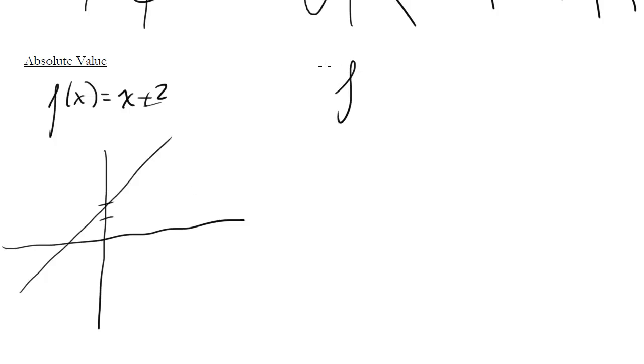What would then, what would this look like? f of x equals absolute value of x plus 2. What does absolute value do again? It turns any negative number in there, when it becomes a negative number, into a positive.